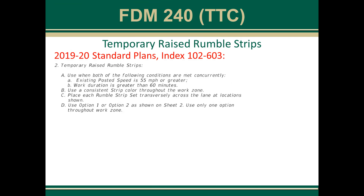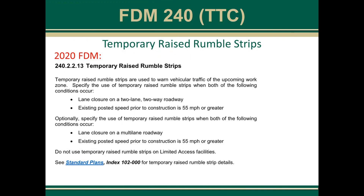Temporary raised rumble strips: the previous requirements were in the standard plans index 102-603, and the requirements have always been located in 603. Moving forward, the speed limit requirement is going to be moving into the FDM. In the 2020 FDM, sub-article 240.2.2.2.2.2.3, the requirement to use temporary raised rumble strips is now housed in the FDM — meaning designers need to ensure they specify usage in their plan set. This would be via a note; it doesn't need to be shown in a phasing plan, just as long as it is clear where the temporary raised rumble strips are to be used.